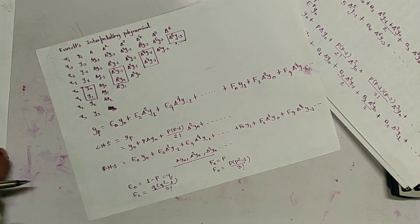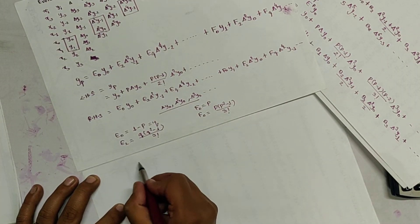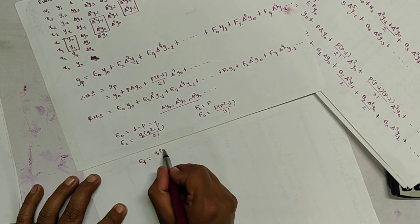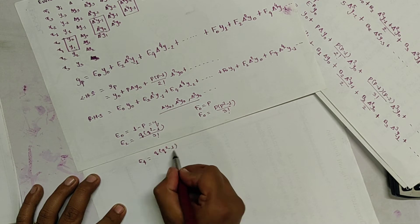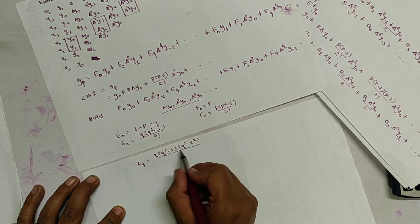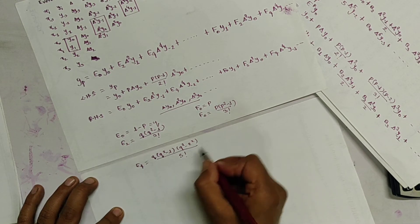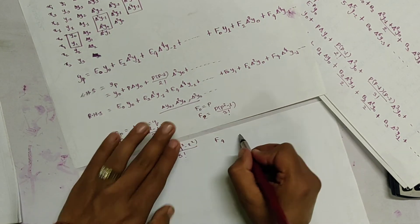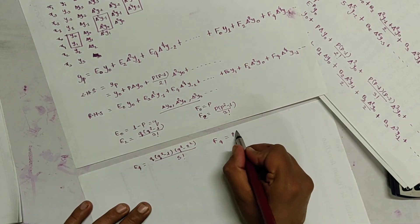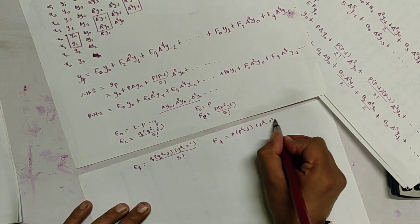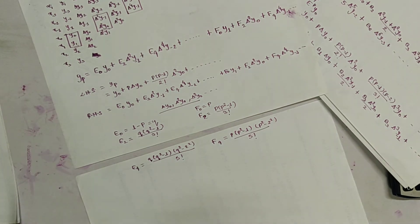And we get e4 equals q(q squared minus 1 squared)(q squared minus 2 squared) over 5-factorial. f2 — okay, it is f2 — f4 equals p(p squared minus 1 squared)(p squared minus 2 squared) divided by 5-factorial.